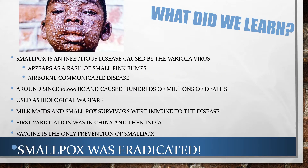In summary, smallpox is an infectious disease caused by the variola virus. It is very contagious and appears as a rash of small pink bumps, and is airborne and communicable. It has existed since 10,000 BC and caused hundreds of millions of deaths. It has been used as biological warfare, and milkmaids and smallpox survivors are known to be immune. The first variolation was in China, then India, and vaccination is the only way to prevent smallpox. Best of all — smallpox is eradicated.